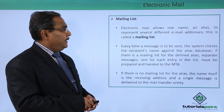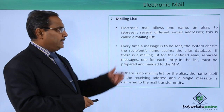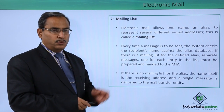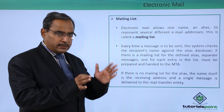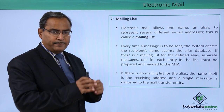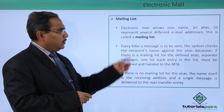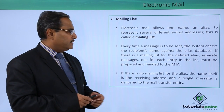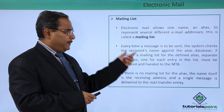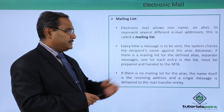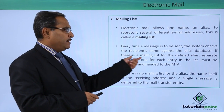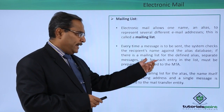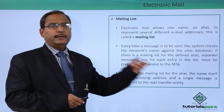Electronic mail allows one name or alias to represent several different email addresses, and this is called a mailing list. One name can have multiple mail IDs associated with it. Every time a message is to be sent, the system checks the recipient's name against the alias database. If there is a mailing list for the defined alias, then separate messages — one for each entry in the list — must be prepared and handed to the MTA.